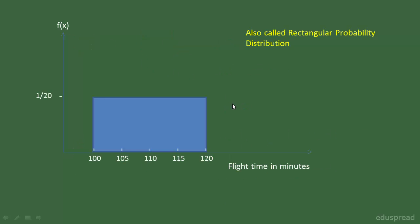If we now draw a uniform probability distribution for flight time, this is how it will look like. The uniform probability distribution is also called rectangular probability distribution, and I think it is clear from the figure why we call it rectangular probability distribution.